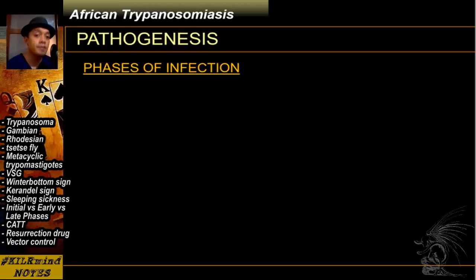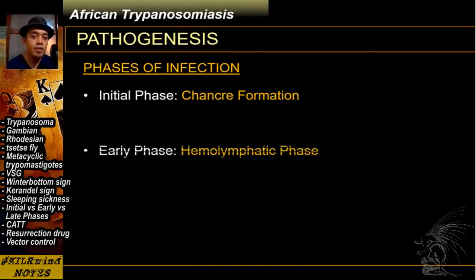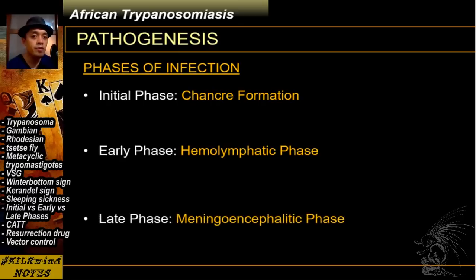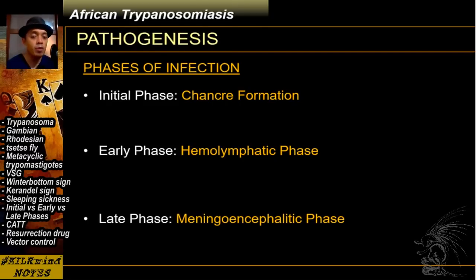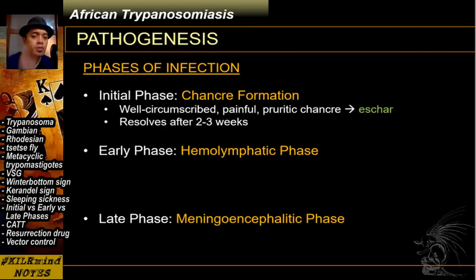There are three phases of infection for human African Trypanosomiasis. You have your initial phase, also called the chancre formation stage; your early phase, called the hemolymphatic phase; and your late phase, which is the meningoencephalitic phase.